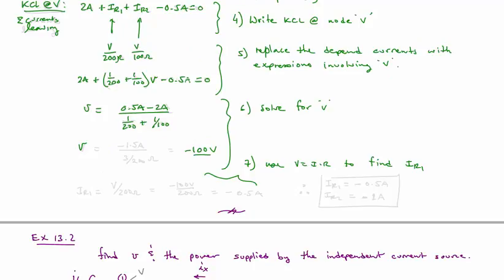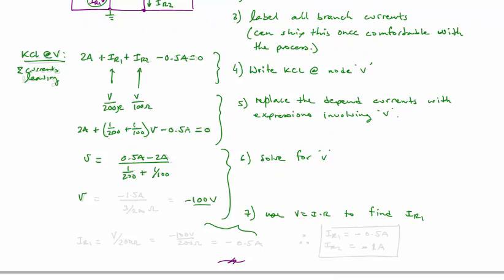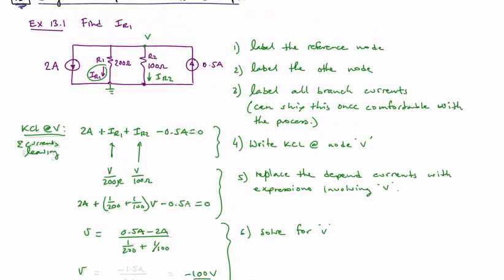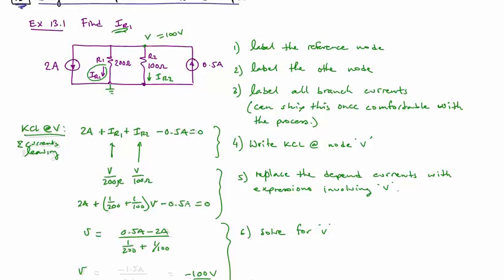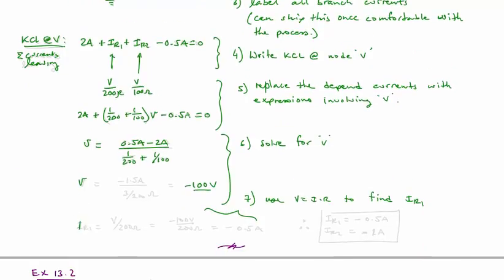We now are ready to solve for our current. Let's go back and look at what we've actually figured out. We figured out that the voltage is 100 volts here. And so now we're asking initially for IR1, and we can solve that now by just writing 100 volts divided by 200 ohms, which is minus 0.5 amps.